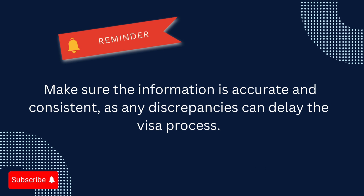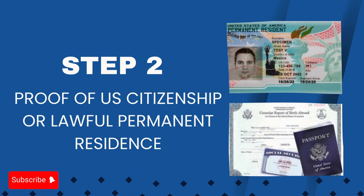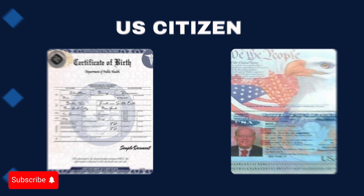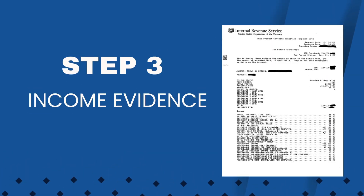Step two: Proof of US citizenship or lawful permanent residence. For US citizens, upload a copy of one of the following: a US birth certificate, a valid US passport biographic page, or a certificate of naturalization. For lawful permanent residents, upload a copy of your green card — both front and back. This proves that the joint sponsor or co-sponsor is legally eligible to sponsor an immigrant.